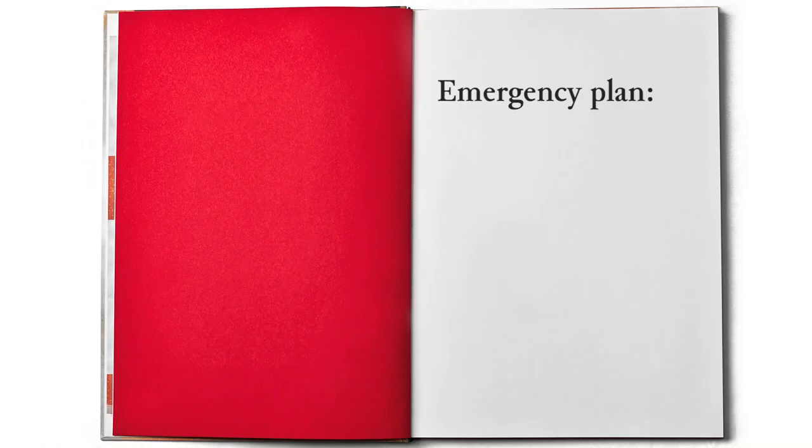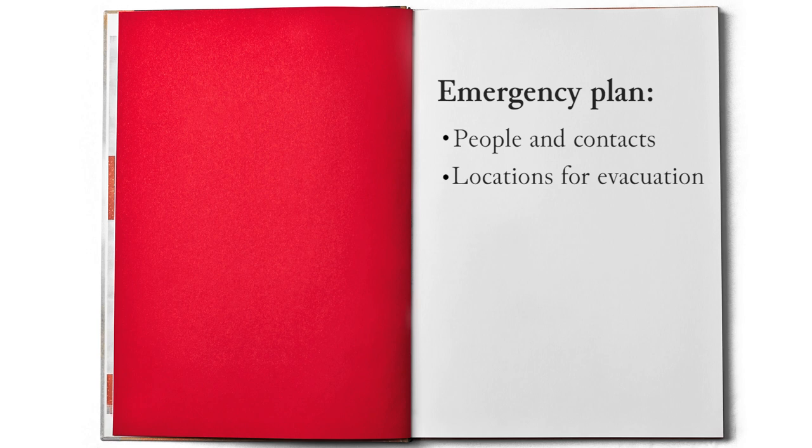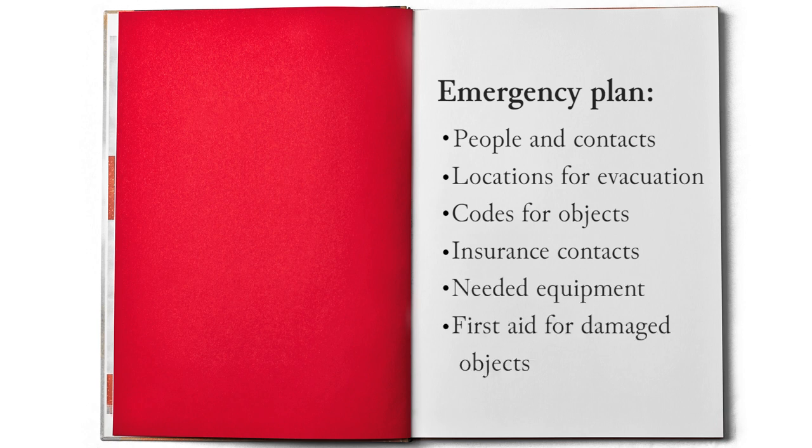According to this workflow, the first thing to do is to assess the risks to objects in emergency situations. The second is to create a plan with recommendations to minimize the risks. This risk assessment should be regularly reviewed. The next step is to produce an emergency plan, including a list of key people and their contact details, a list of locations for evacuation, the priority codes for removing objects, a list of insurance contacts, a list of needed equipment, and the first aid steps for damaged objects.